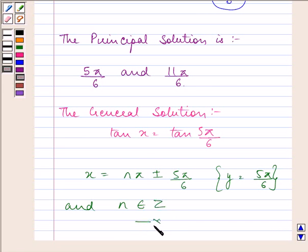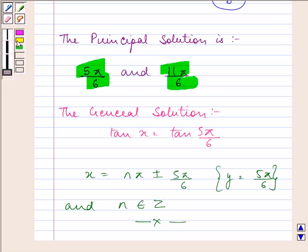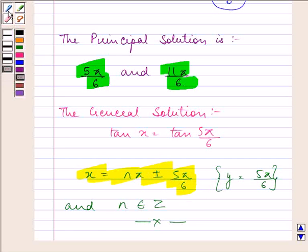So this ends the question. I hope you enjoyed the session. Our final answer: the principal solution is 5 pi by 6 and 11 pi by 6, and our general solution is x equals n pi plus 5 pi by 6.